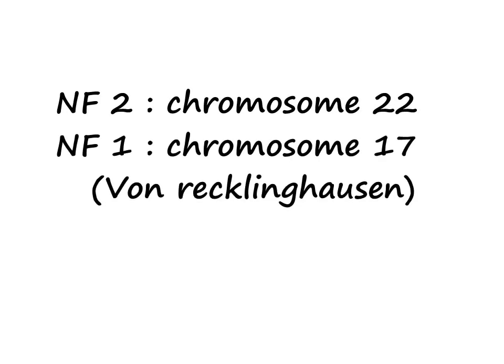The next group is neurofibromatosis 2 and neurofibromatosis 1. NF2 is simple — chromosome 22. For NF1, it is also known as von Recklinghausen disease. If you count the number of letters in 'von Recklinghausen,' it is 17 letters, so it is chromosome 17.